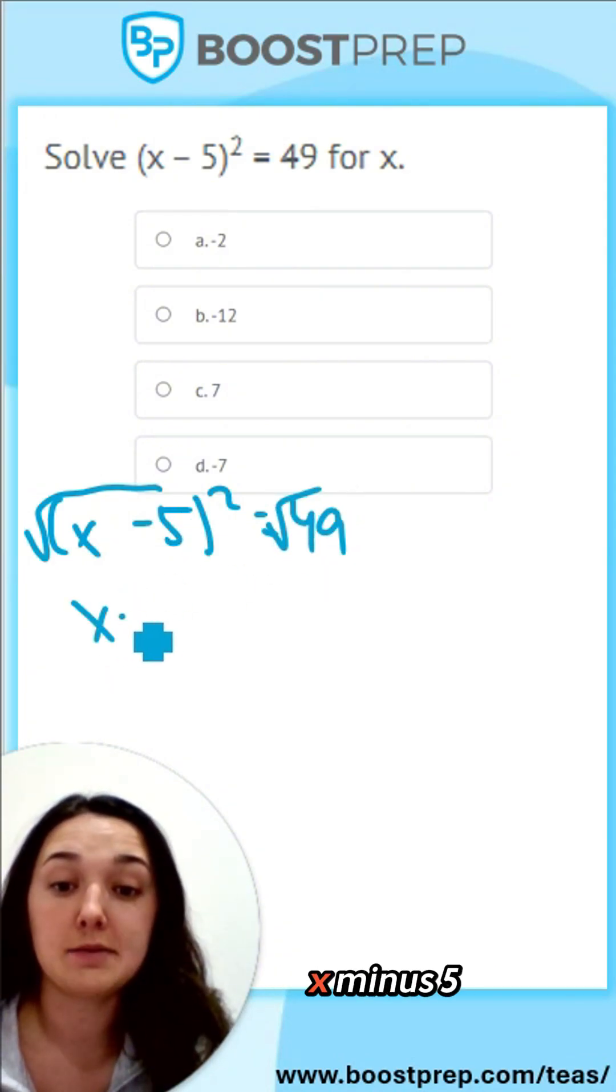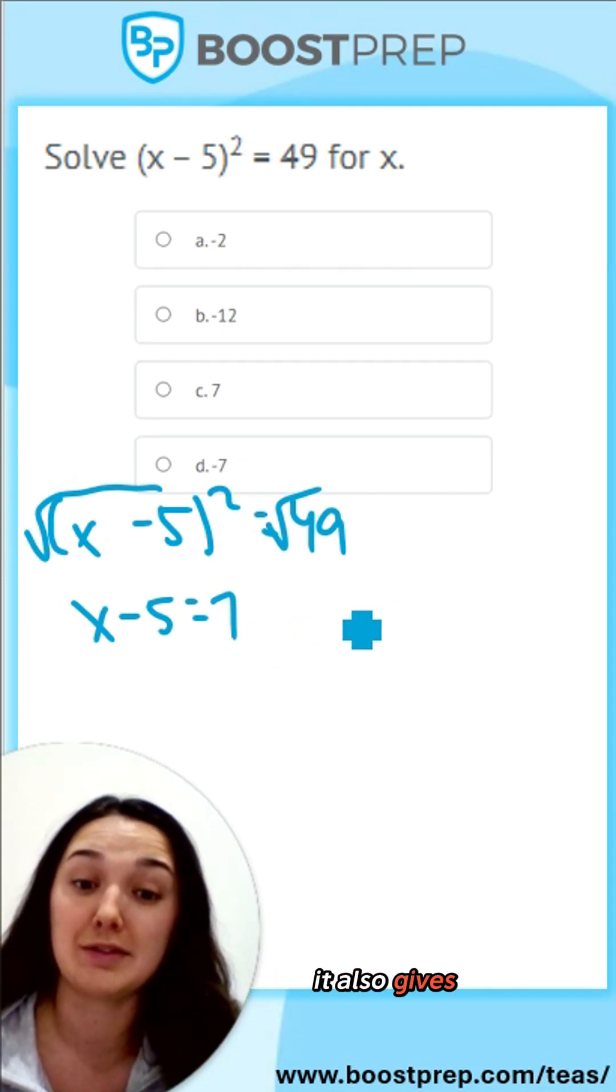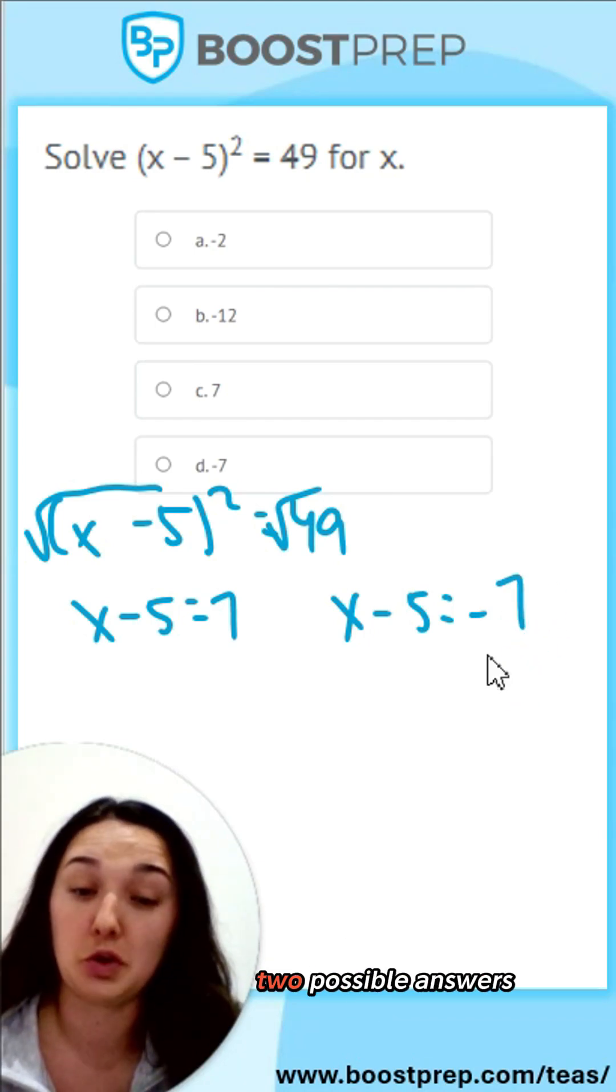That gives you x minus 5 equals 7, and then you have to remember when you're doing the square root, it also gives you the option of x minus 5 equals negative 7, since there are two possible answers.